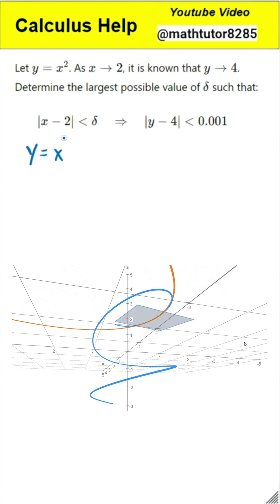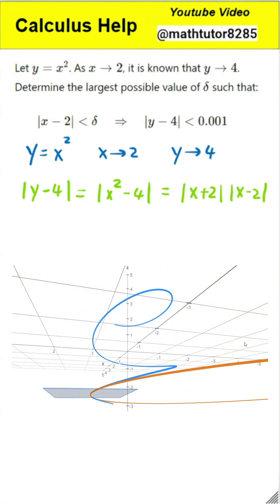Step 2: Rewriting the difference. To connect y and x more precisely, we look at how far y is from 4. Since y is x-squared, the expression becomes the absolute value of x-squared minus 4. This can be rewritten as the absolute value of the product of (x-2) and (x+2). In simple terms, the distance between y and 4 equals the distance between x and 2 multiplied by the value of x+2.